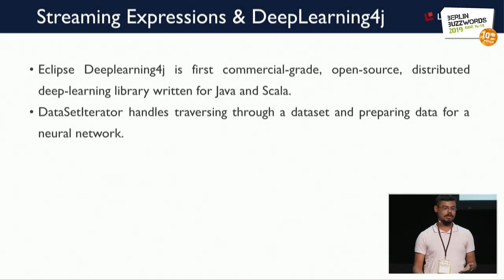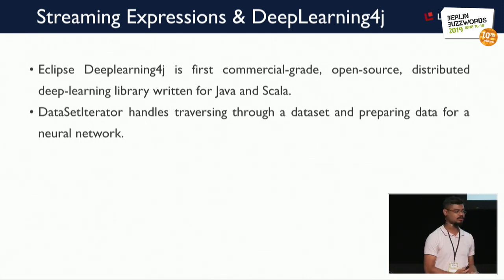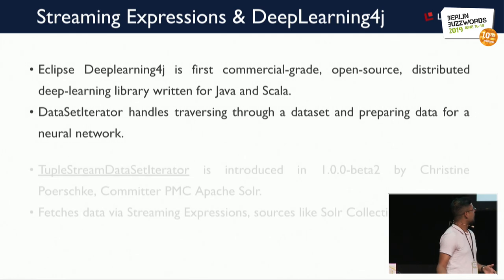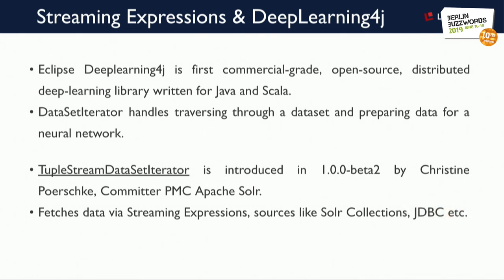Streaming expressions have made their mark in other fields too. DeepLearning4J is a commercial open source distributed deep learning library written for Java and Scala, and has a dataset iterator that handles traversal of datasets for model training. In DeepLearning4J version 1.0 beta 2, a tuple stream dataset iterator has been introduced, allowing you to fetch data from any Solr collection or a JDBC-based database to train models and generate predictions.